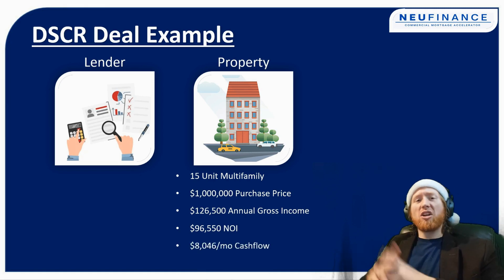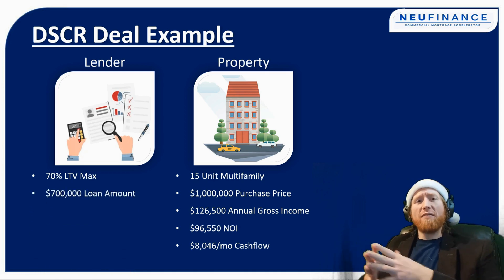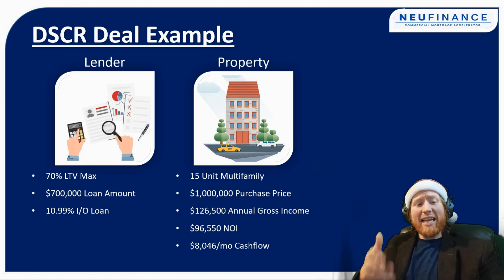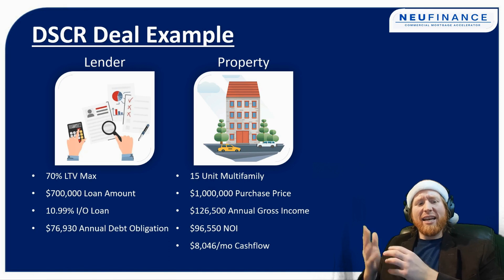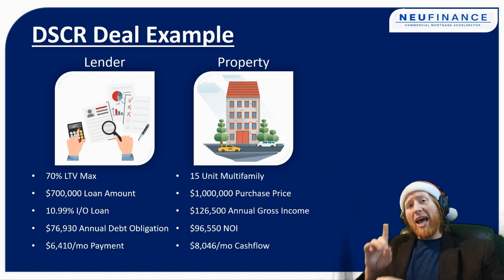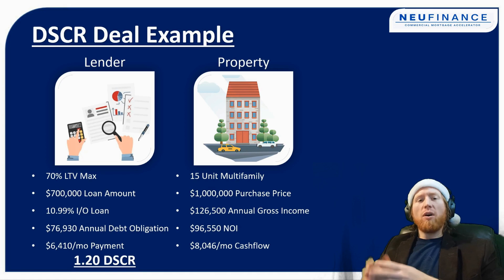The lender loves the location and they're cool with the purchase price, so now they're going to set out their terms. The lender says they're willing to lend 70% loan to value, which comes out to a $700,000 loan amount, on an interest-only loan at 10.99%. That interest rate multiplied by the $700,000 debt gives us an annual debt obligation of $76,000, or a $6,400 monthly payment. The lender then states that the property must debt service at a 1.2 DSCR or greater.